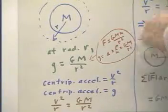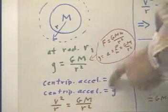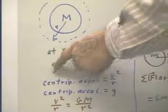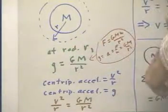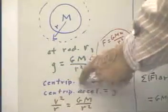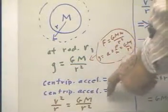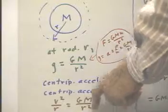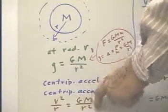So setting these two things equal, with g equal to big G M over R squared, we see that V squared over R, the centripetal acceleration, has to equal G M over R squared, which is g, which is the centripetal acceleration.